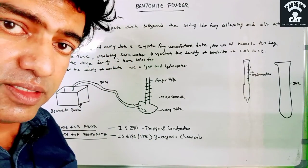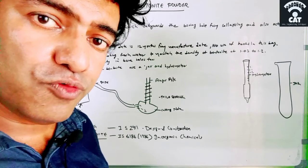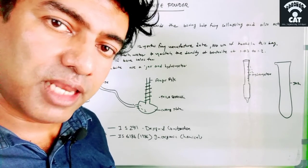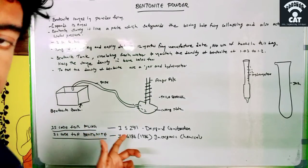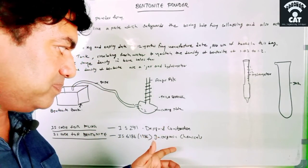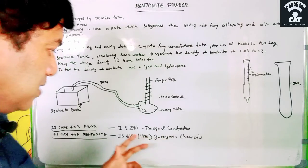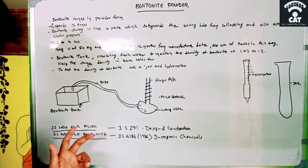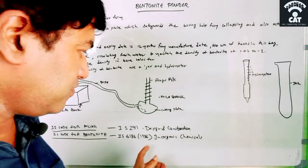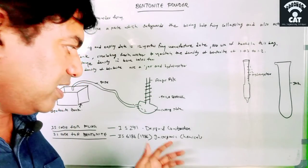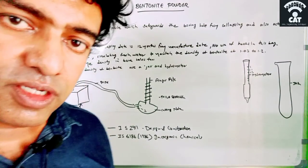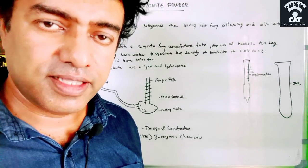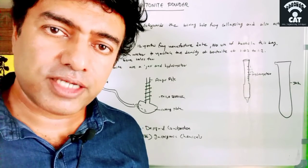The codes that we need to follow when we are doing piling and bentonite work is the IS code for piling, which is IS 2911 - Design and Construction of Piles. And then the IS code for bentonite is IS 6186 1986 - Inorganic Chemicals, which says all the things related to bentonite in a site.